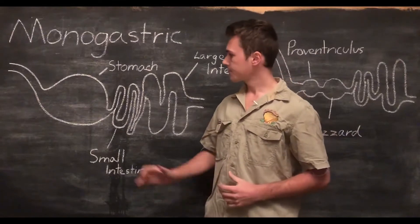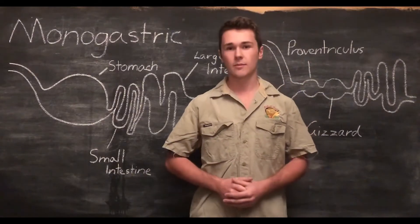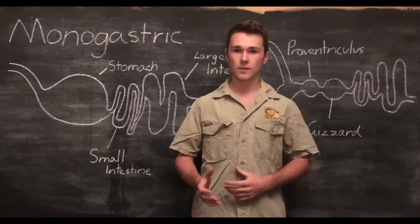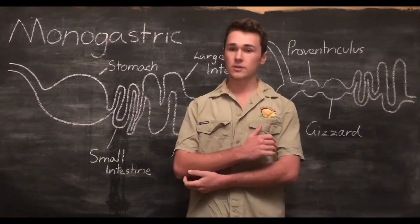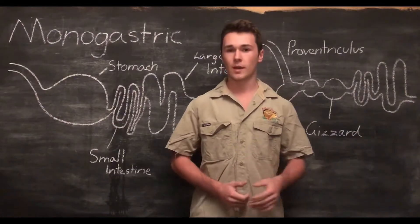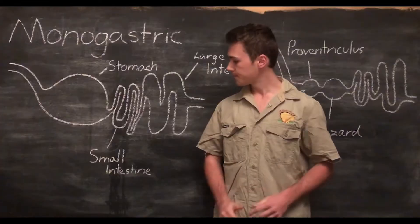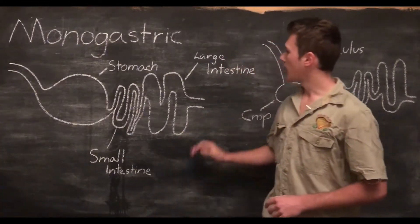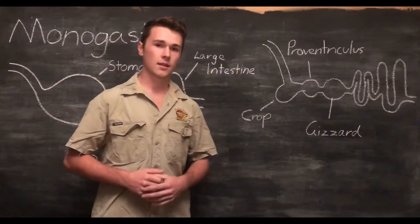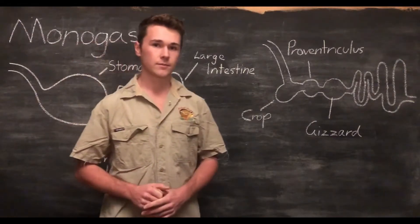The most important things to remember about monogastric systems are the stomach, small intestines, and large intestines and their functions. Crucially, monogastric animals can't produce their own proteins, so all amino acids, vitamins and nutrients are required to be given to these animals in their diet. In summary: the stomach adds gastric fluids — hydrochloric acid and enzymes — to break down food. The small intestines absorb nutrients and the large intestines absorb moisture and water. For chickens and poultry, the crop stores and softens food, the proventriculus acts as a stomach, and the gizzard further breaks down food.